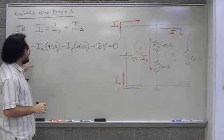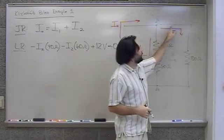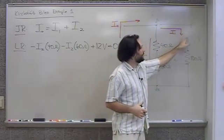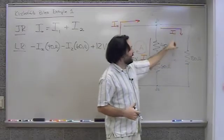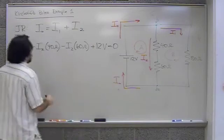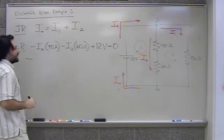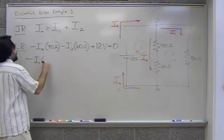Now I apply the loop rule to loop B. Starting in the upper left hand corner again. I'll move this way. Down this way. I get to the 80 ohm resistor. Now I'm traveling, let's see, I'm traveling with I1. And when you travel with the current across the resistor, it's a negative voltage. So I have negative I1 times 80 ohms.